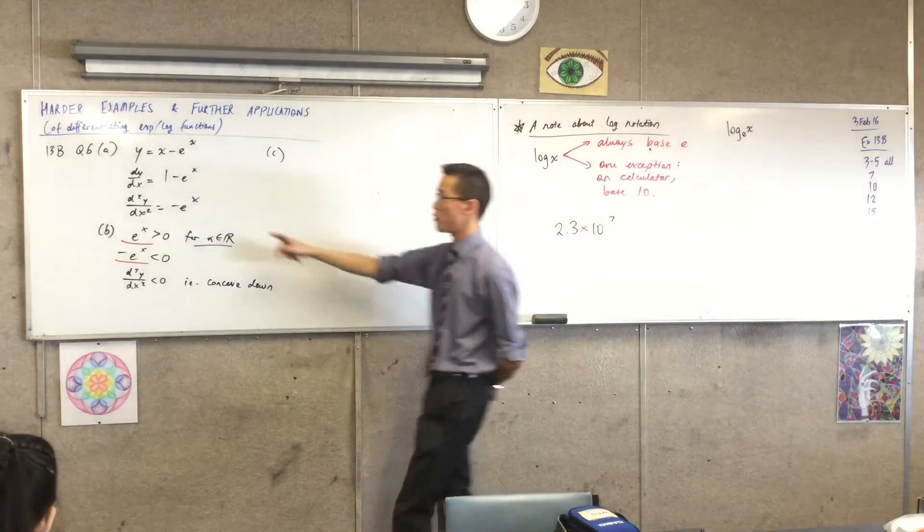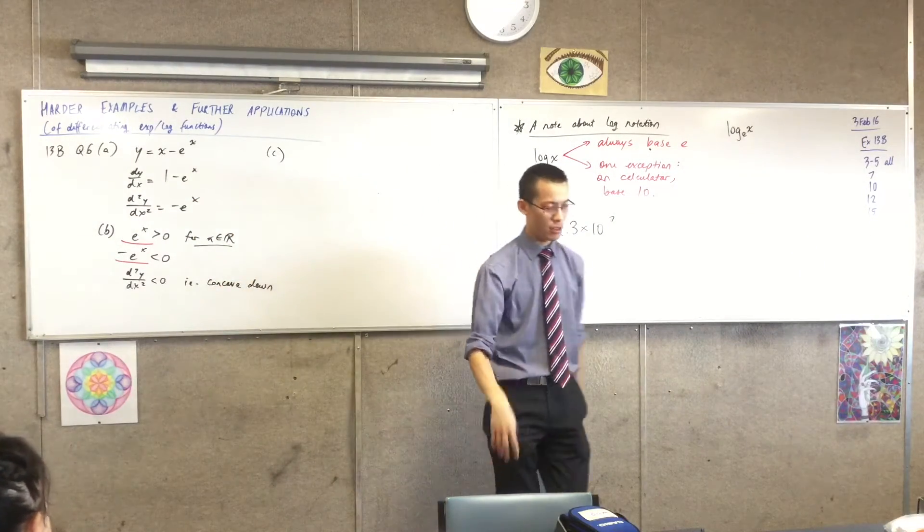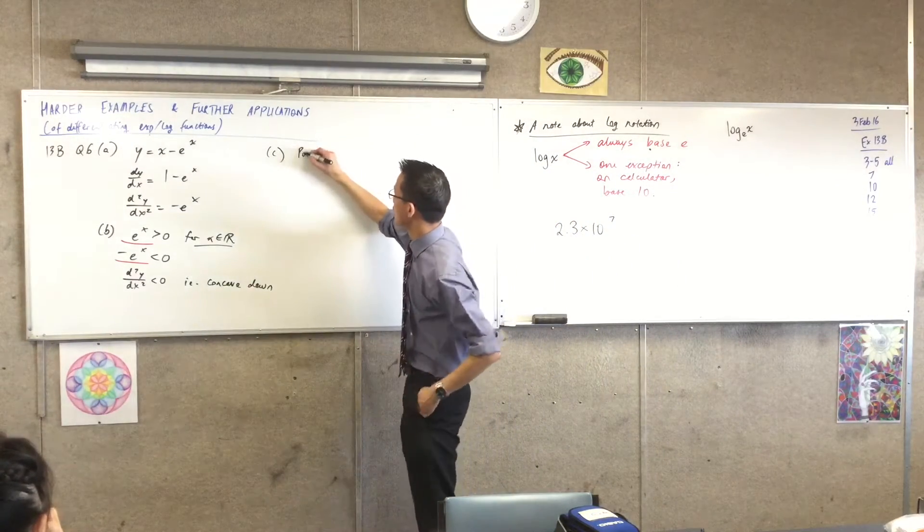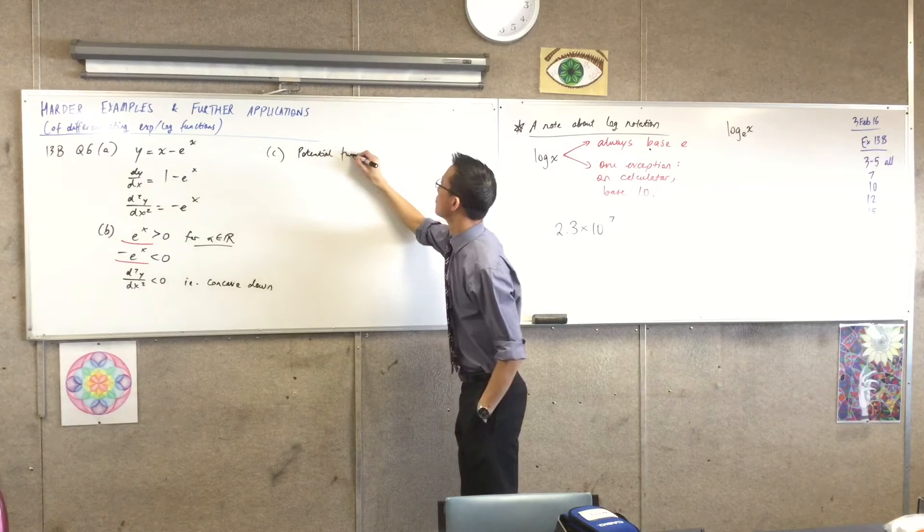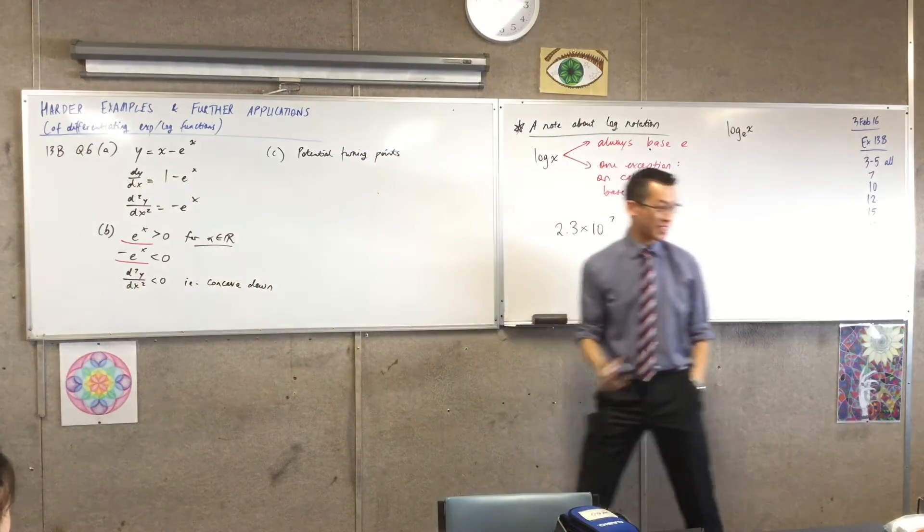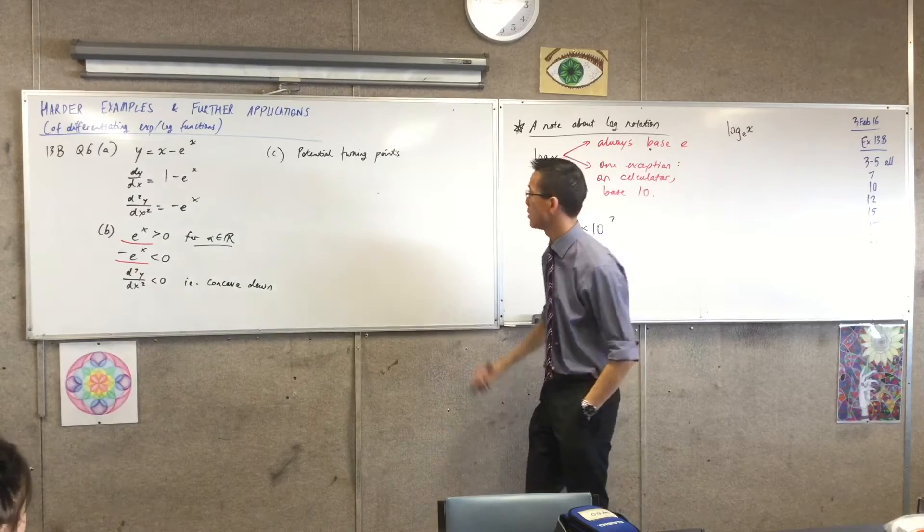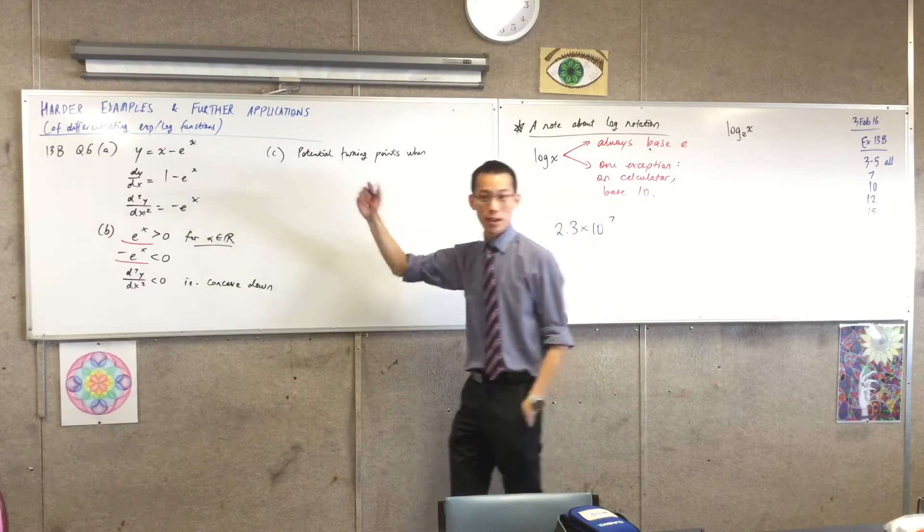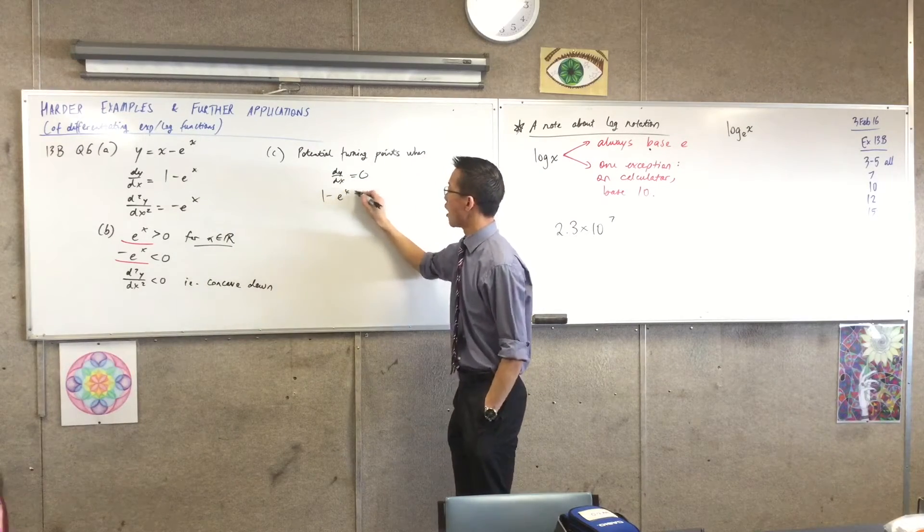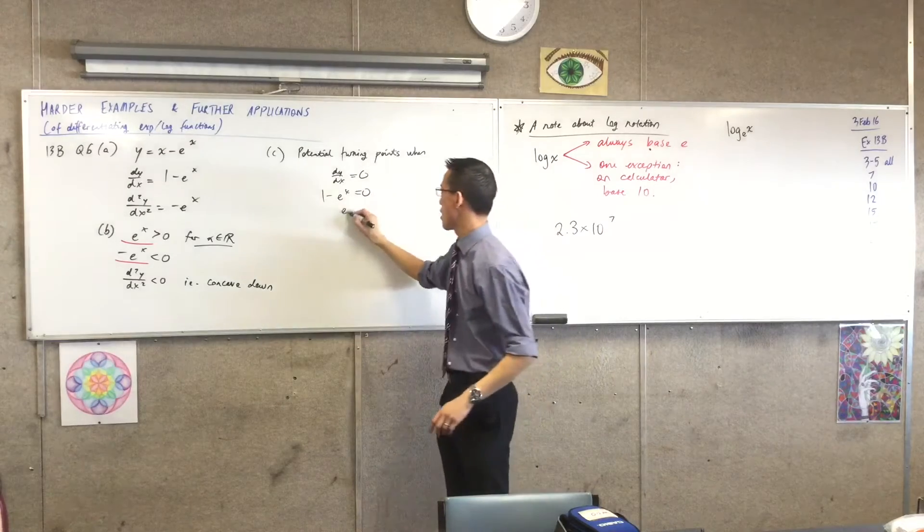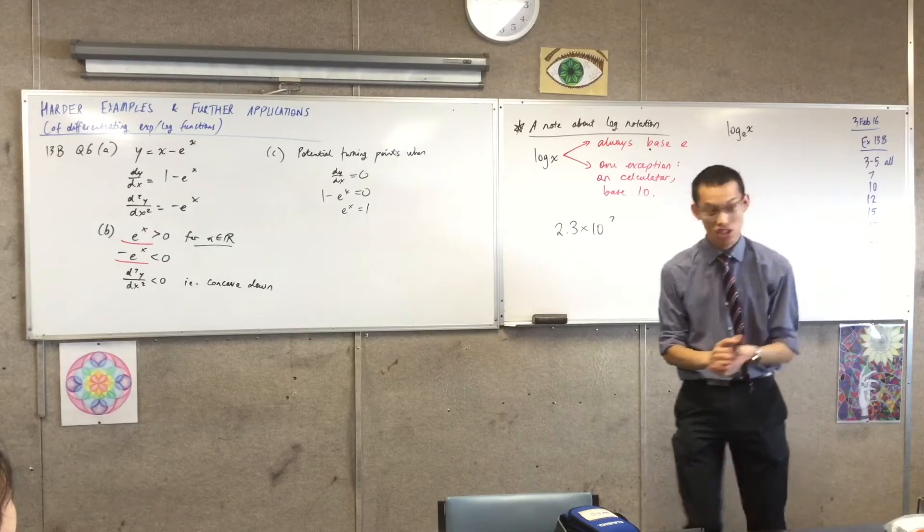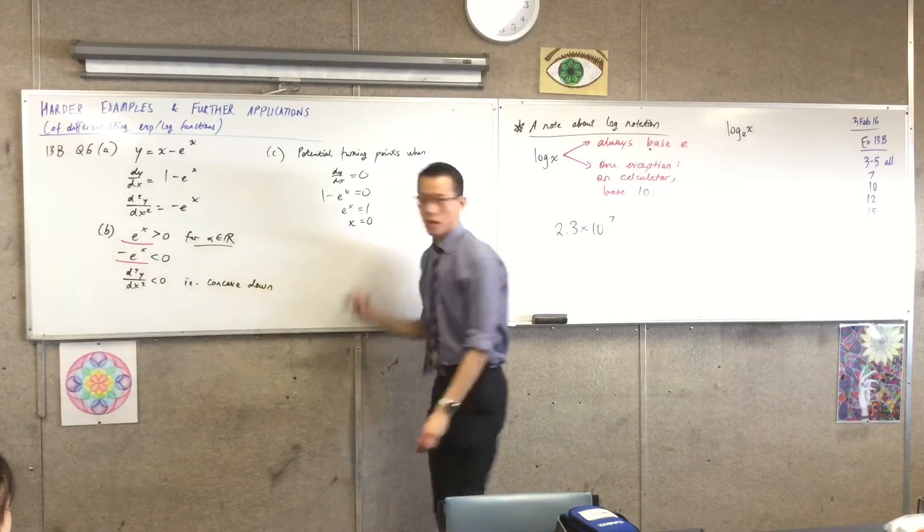Very good. Because the first derivative will tell us potential turning points, right? Tell us where the stationary points are, and we can work out what kind of stationary points they are. So, therefore, I'll say potential turning points. Because, remember, what I'm about to say doesn't guarantee a turning point. It guarantees a stationary point, but not a turning point. When the first derivative is zero. I already know what the first derivative is. So, I'll just tie things up. 1 minus e^x equals zero, so x equals one. So, x takes on what value? Zero. It's just zero.